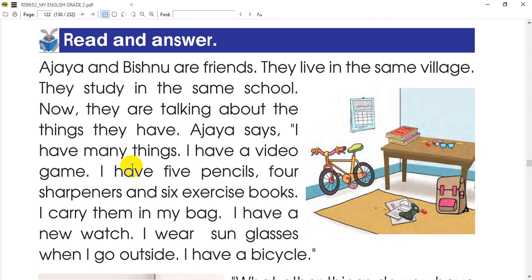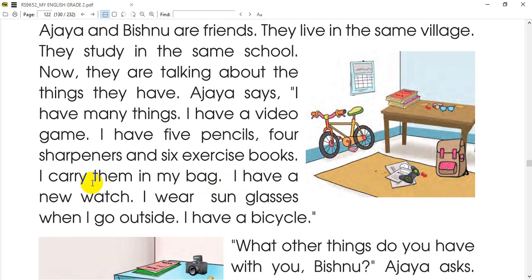I have a video game. I have 5 pencils, 4 sharpeners and 6 exercise books. I carry them in my bag — they are all in my bag. I have a new watch. I wear sunglasses when I go outside. I have a bicycle. Now we can see the picture: bicycle, notebooks, glasses, watch, video game bag, pencil, sharpener — all of these things.